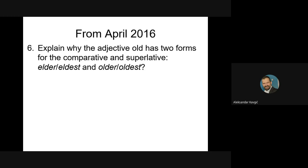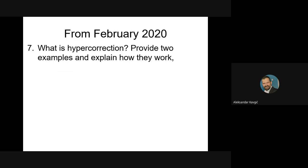Sometimes instead of typical analogical change, you can get questions about other forms like folk etymology, back-formation, or metanalysis — but never blending, because it's controversial. Before Corona came to Serbia in February 2020, one exam question was: what is hypercorrection? Provide two examples and explain how they work. You can get up to three questions about analogy, so expect that.